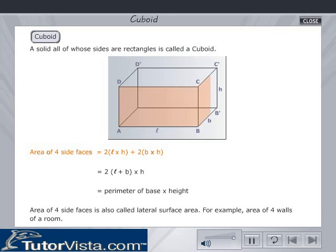Then, the area of four side faces is presented. The area of four side faces is also called lateral surface area; for example, the area of four walls of a room.